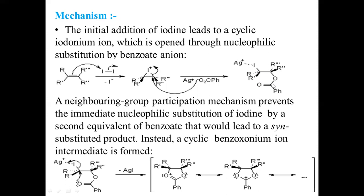However, due to neighboring group participation, the benzoate that previously attacked acts as a neighboring group and attacks onto this carbon via neighboring group participation. So the second equivalent of benzoate does not come and attack. After this neighboring group participation, the carbon–iodine bond gets cleaved, and iodine gets liberated as silver iodide. The oxygen with its lone pair of electrons acts as the neighboring group, attacking this carbon, and iodine is liberated as silver iodide.